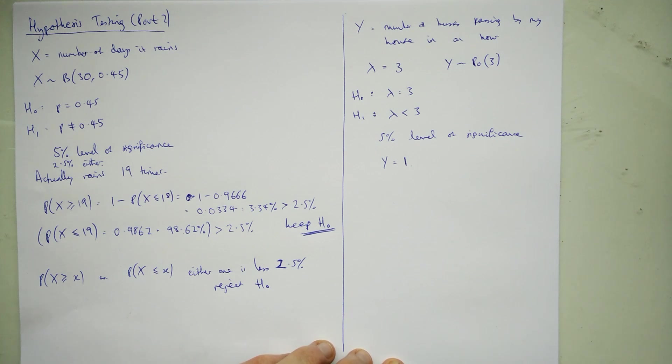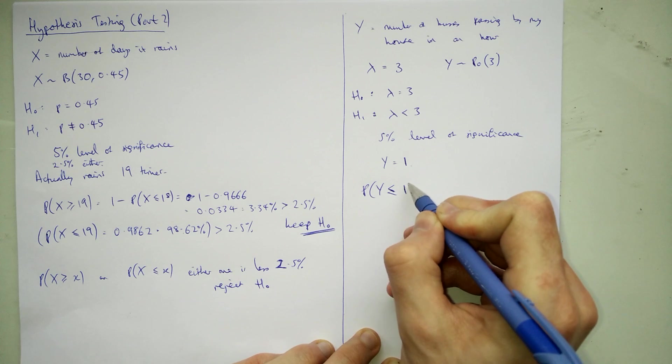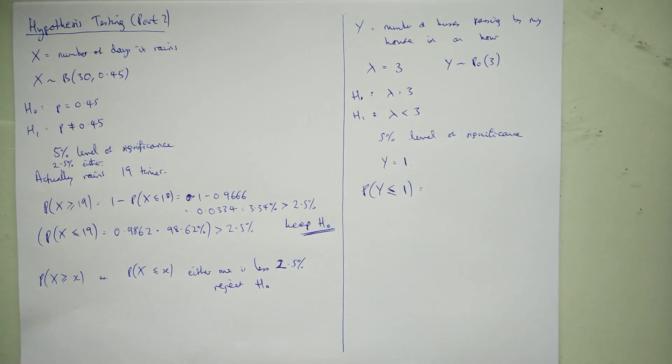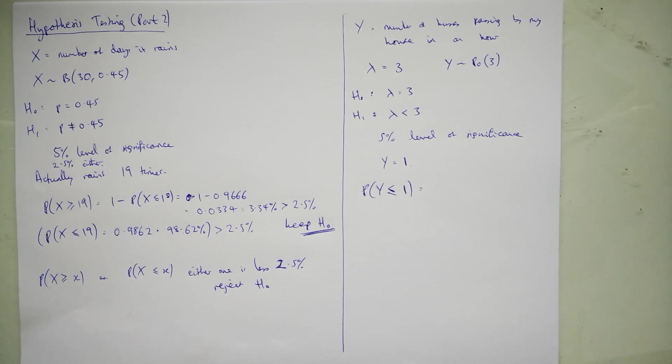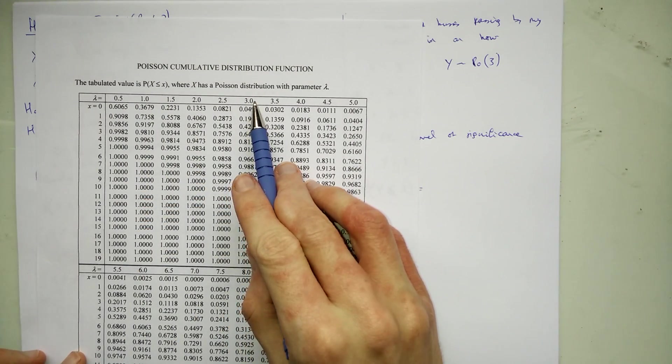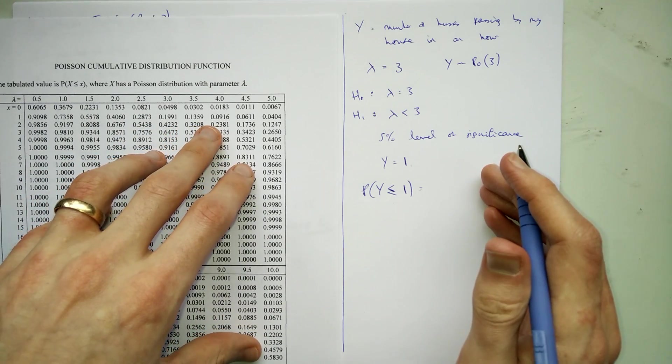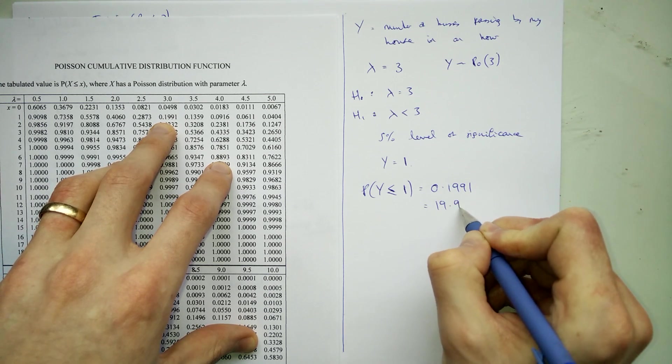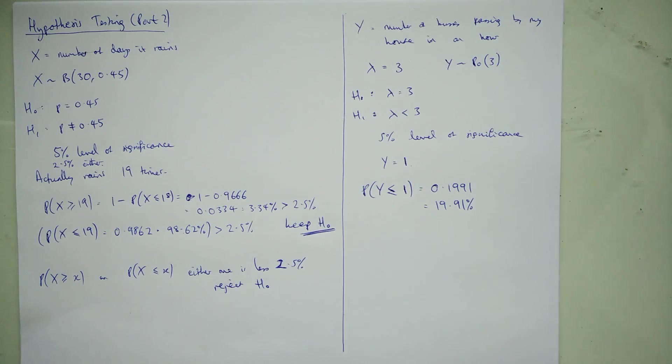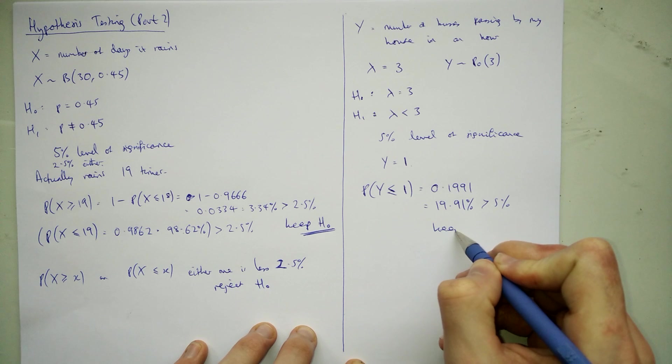Let's see if this is significant or not. So we've got to look at the probability that Y is less than or equal to 1. So we're looking at lambda being 3. And we're looking at the value of 1 on 3, which is 0.1991. Where has it gone? Yeah, there. So 0.1991, which is otherwise known as 19.91%. So this is bigger than 5%.